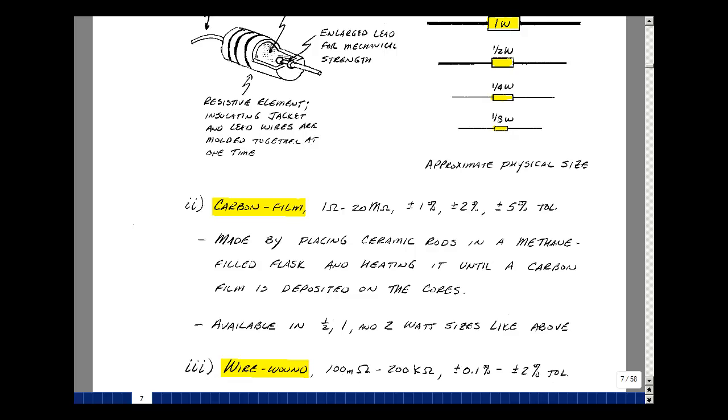Carbon film resistors are also available from roughly 1 ohm to 20 megohms. But they come in 1, 2, and 5% tolerances. They're made by placing a ceramic rod in a methane-filled flask, and heating it until a carbon film is deposited on the core. These are also available in half, 1-watt and 2-watt sizes.